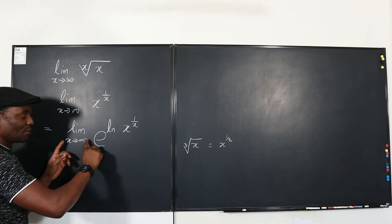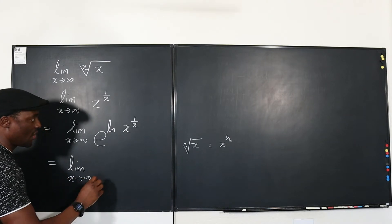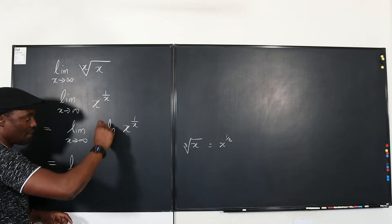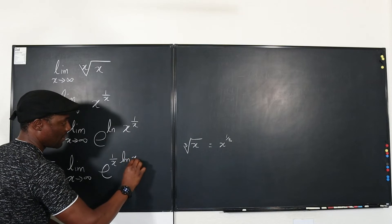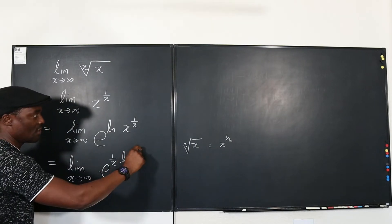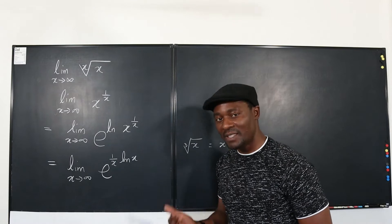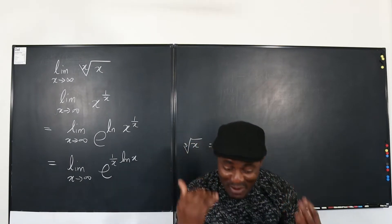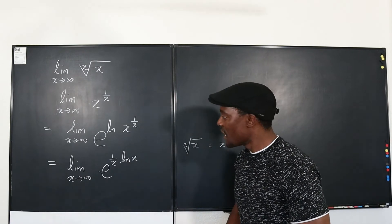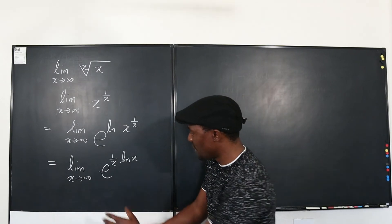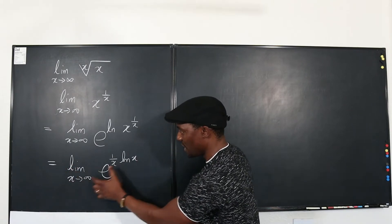So here we go. What we have eventually is the limit as X goes to infinity of E to the one over X times natural log of X. The one over X comes down as an exponent. Because this can get back the original expression, I haven't really changed anything. Now, because you're taking a limit of an expression and E is a constant, this limit is only affecting the portion that contains X.